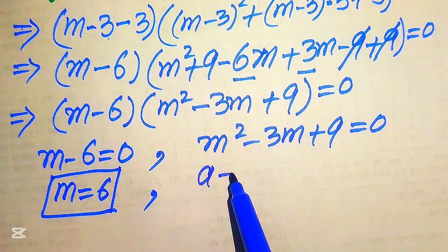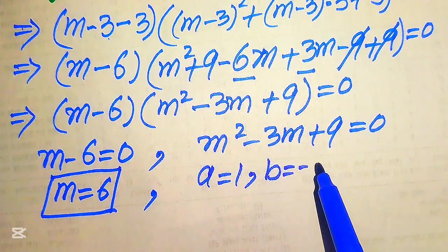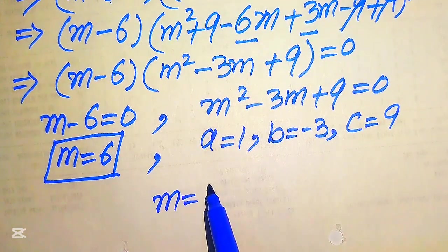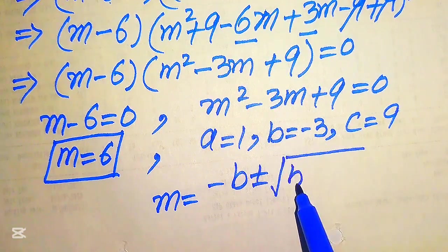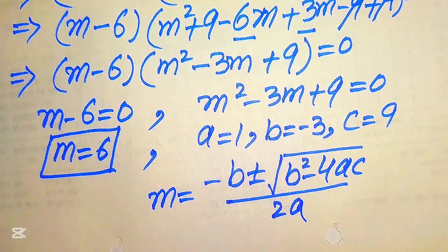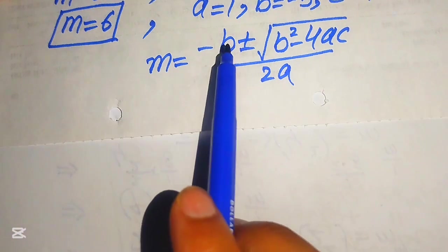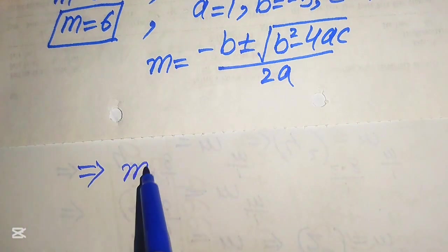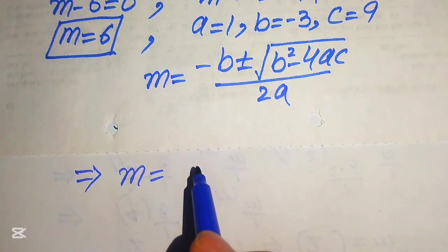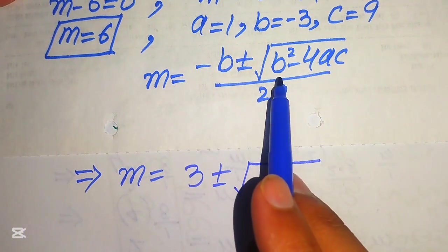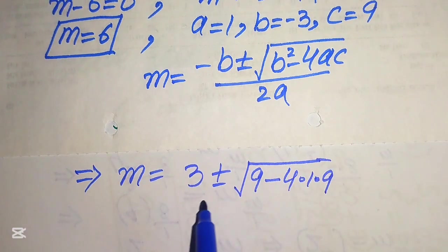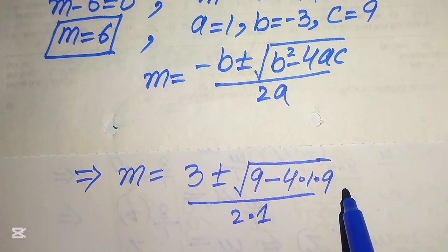For Case 2, the coefficients are a = 1, b = −3, and c = 9. We state the quadratic formula: m = [−b ± √(b² − 4ac)] / (2a). Substituting the values: −b becomes −(−3) = +3, b² = (−3)² = 9, and 4ac = 4(1)(9) = 36, divided by 2(1) = 2.